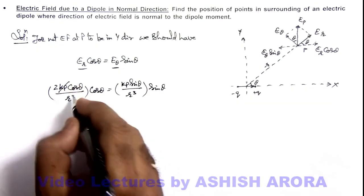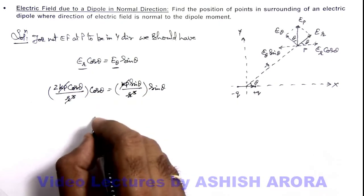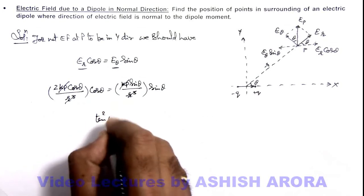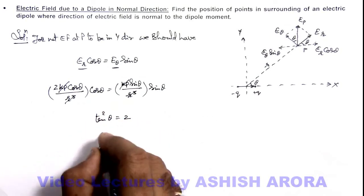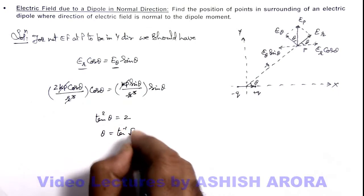Here kp by r cube gets cancelled out and this will give us tan squared theta equals to 2. So the value of theta will be tan inverse of root 2.